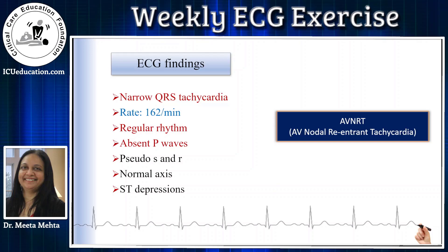Commonly people call it SVT — supraventricular tachycardia — but remember SVT means all tachycardias which are narrow complex, whether regular or irregular. So AVNRT is actually a type of SVT. For the similar ECG findings of narrow QRS tachycardia, regular rhythm, and absent P waves, there are two more differential diagnoses: junctional tachycardia and atrial flutter.